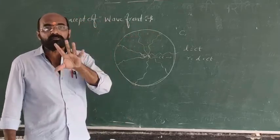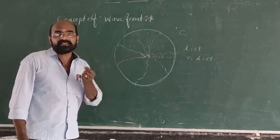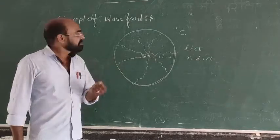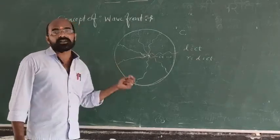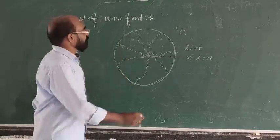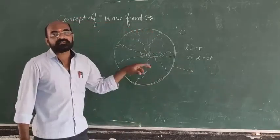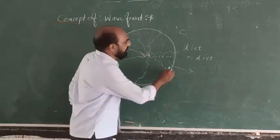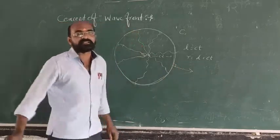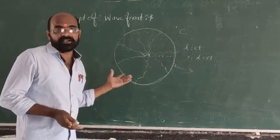The locus of all the points of the medium which are vibrating in the same state of vibration is known as a wavefront of light. If you draw normal to this sphere, that is making 90 degree angle, it is called as a wave normal of that particular wavefront.